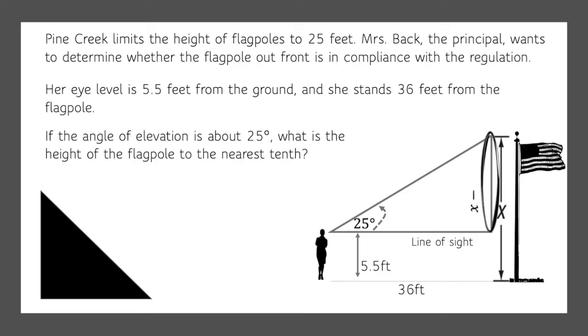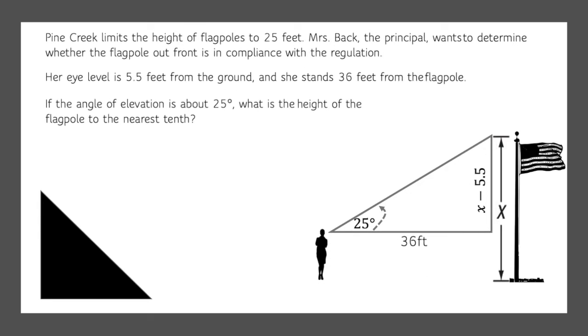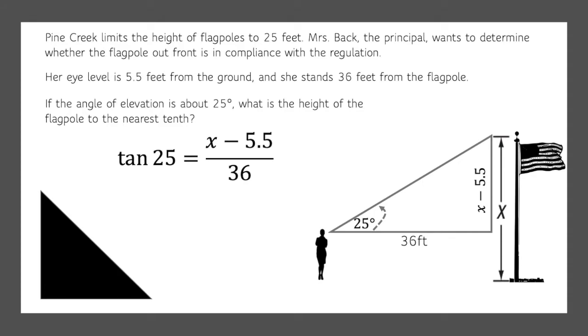We know that this part of the triangle is x minus 5.5. Now we can pull in our trigonometry. The tangent of 25 equals opposite (x minus 5.5) divided by adjacent 36. We'll multiply both sides by 36, so we get 36 times the tangent of 25 equals x minus 5.5.